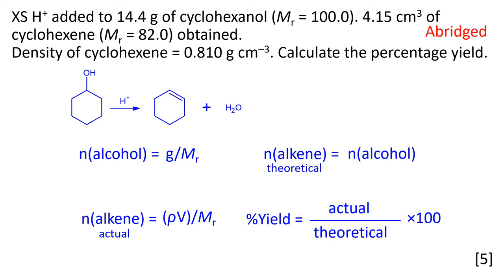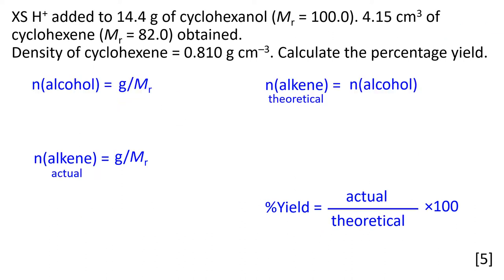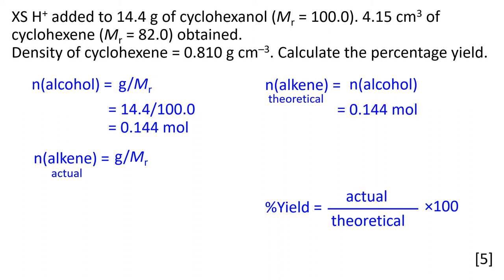Just a word about showing your working. We haven't got any numbers on the page yet, but already we can see all the formulas and quantities defined — that would be, in my opinion, very good practice. The amount of alcohol is given by mass over molar mass. From the question: 14.4 grams, and the molar mass was kindly provided. That works out to be 0.144 moles — the same as the theoretical amount of alkene, since it's a one-to-one reaction.